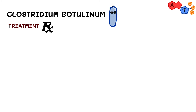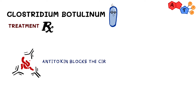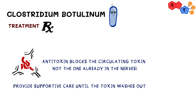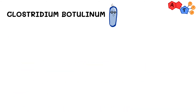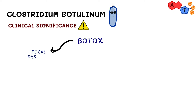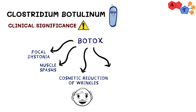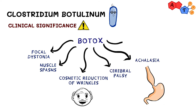For treatment, we give an antitoxin that blocks the circulating toxin but not the one already in the nerves, and all we can do is provide supportive care until the toxin washes out. Interestingly, botulinum toxin is also used as treatment in many disorders. For example, botulinum toxin A, also known as Botox, is used to treat focal dystonia, muscle spasms, cosmetic reduction of facial wrinkles, cerebral palsy, achalasia, and vaginismus.